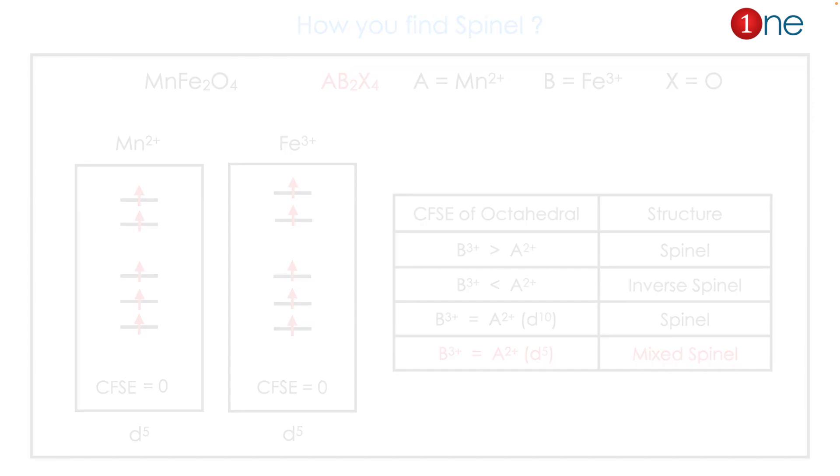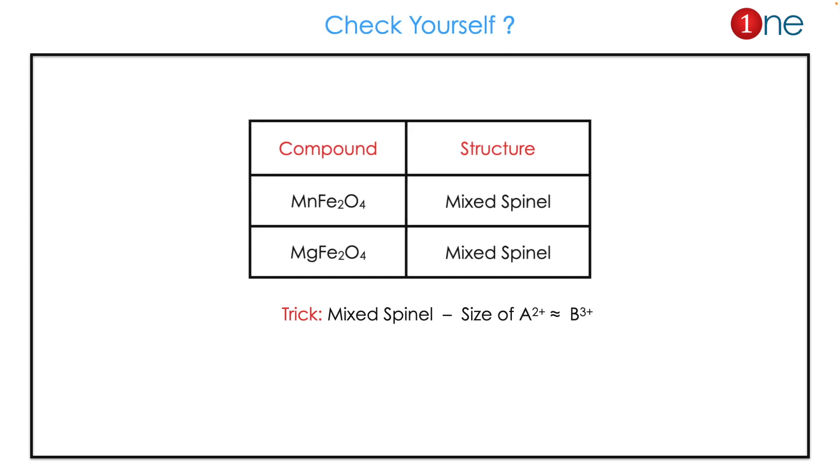Then I given some structures to practice yourself. So practice with the concept that d5 system. The simple trick will be the size of the cation which is divalent equal to trivalent.